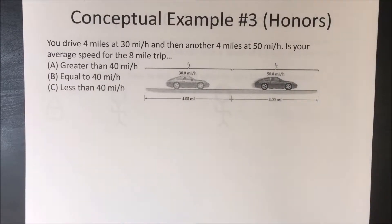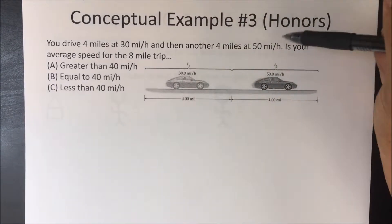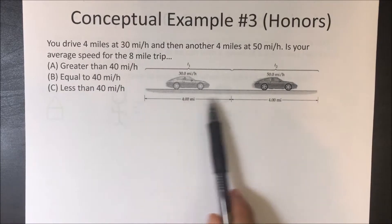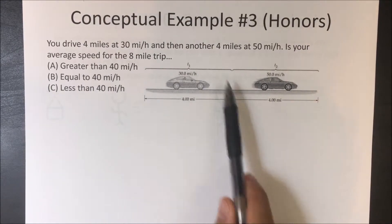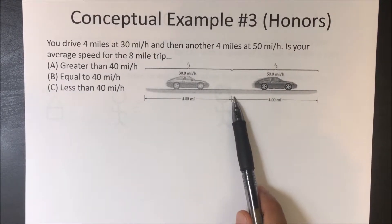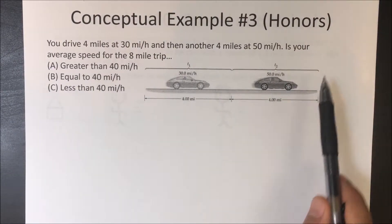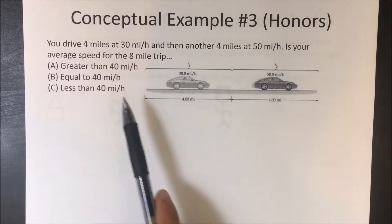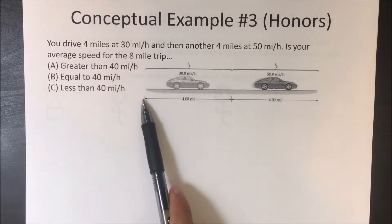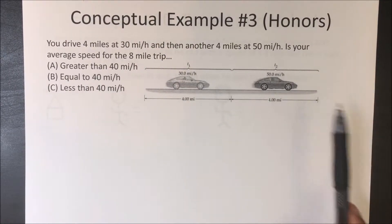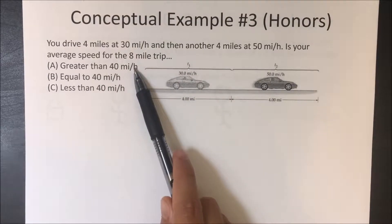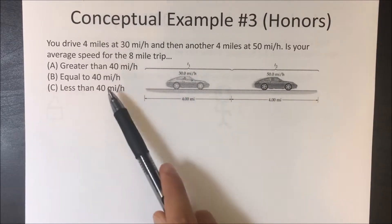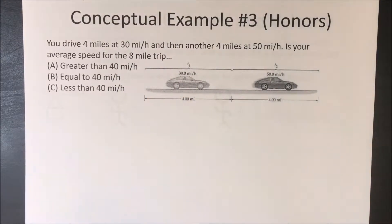Conceptual Example number 3: An Honest Question. You drive 4 miles at 30 miles an hour and then another 4 miles at 50 miles an hour. Is your average speed for the entire 8-mile trip greater than 40 miles an hour, equal to 40 miles an hour, or less than 40 miles an hour?